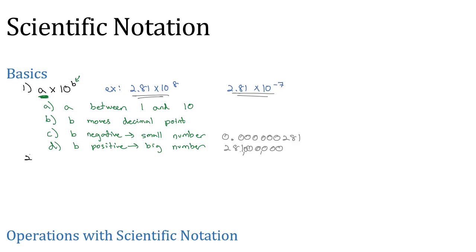Let's take a look at some examples of going back and forth between scientific notation. First, let's look at the example 5.23 times 10 to the fifth power.